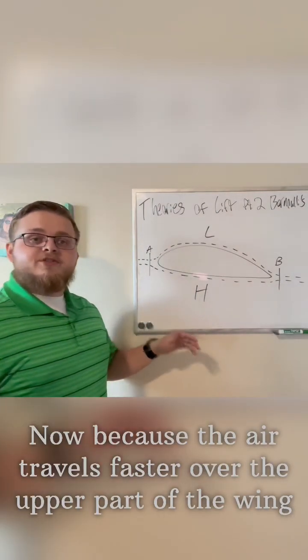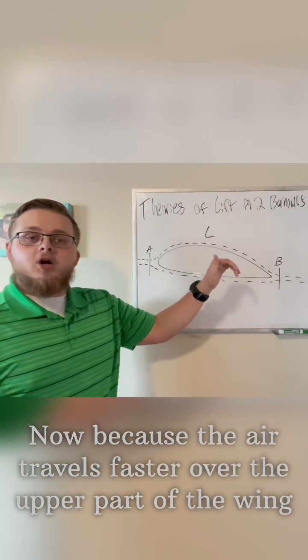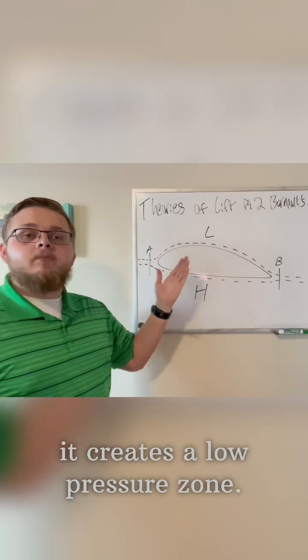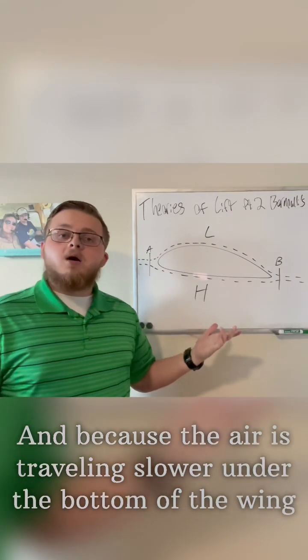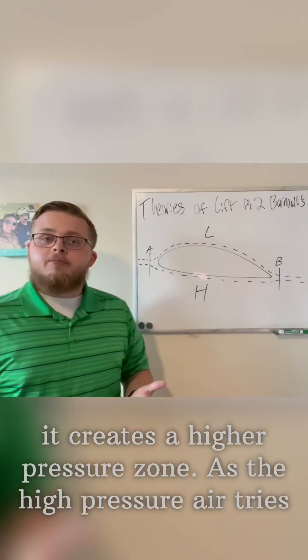Now because the air travels faster over the upper part of the wing, it creates a low pressure zone. And because the air is traveling slower over the bottom part of the wing, it creates a higher pressure zone.